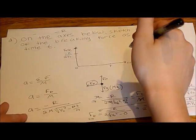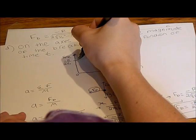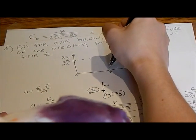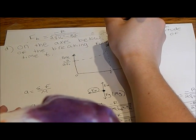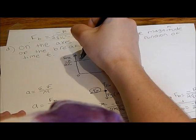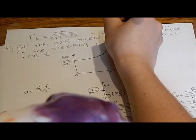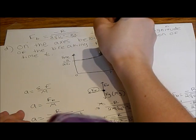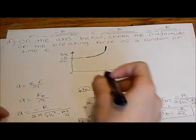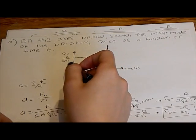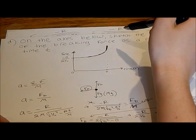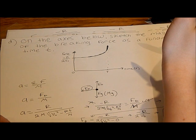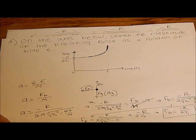So on the axis, t goes to infinity. The graph starts at negative r over 2 v-naught at t equals zero, and it keeps getting bigger and bigger with no limit. That is what the graph of the braking force looks like — it grows continuously with no upper bound.